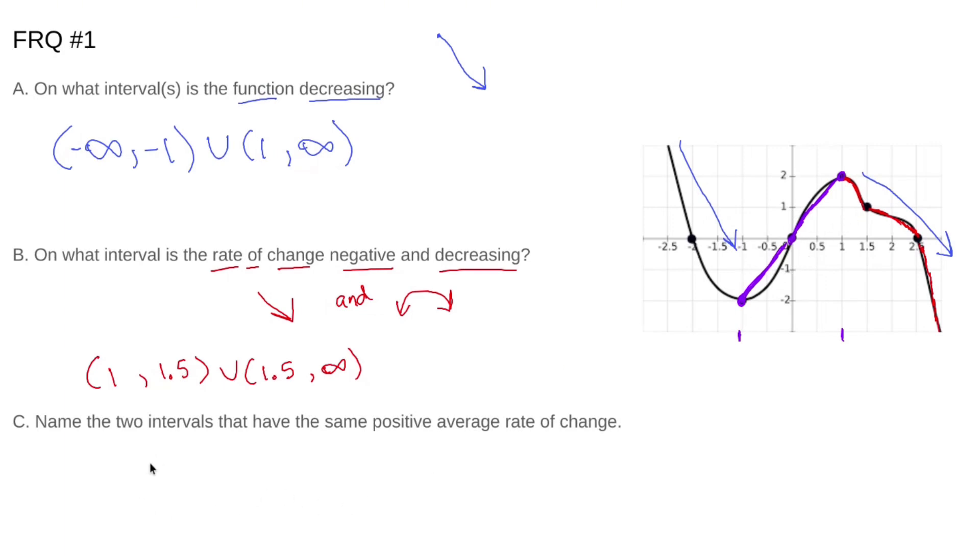So it appears to me that between negative 1 to 0 and 0 to 1, we have the same average rate of change. So I'm going to go with that. So that's our first free response question. Tons of fun.